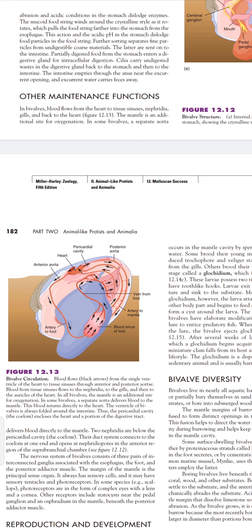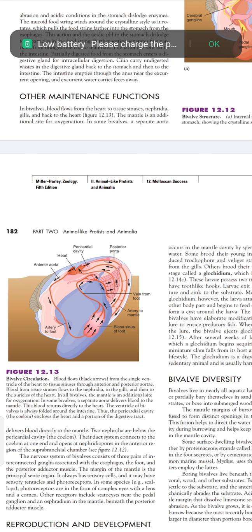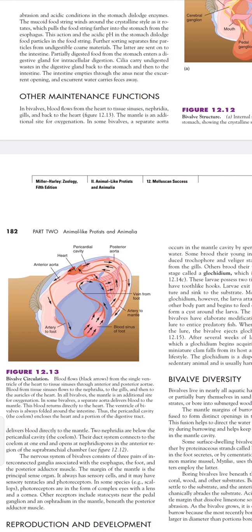Then we see the sense organs. Fourth, the margin of the mantle is the principle sense organ. The mantle margin is the principle sense organ. It always has sensory cells. It has sensory tentacles and photoreceptors. Tentacles are present and photoreceptors which accept light stimuli. In some species, the photoreceptors are present in the form of complex eyes. The eye has a lens and cornea. Both of these parts are present in the eye.